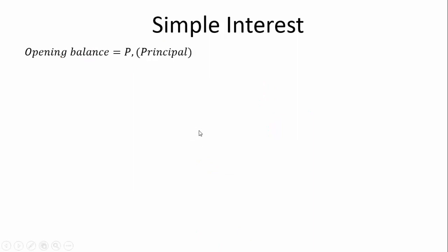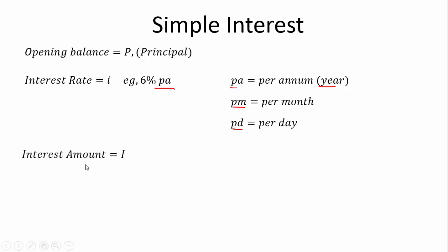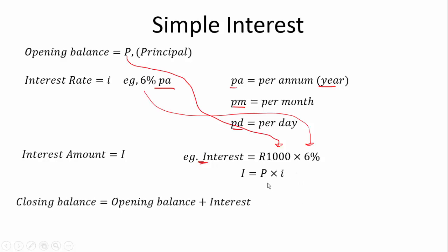Sometimes we call our opening balance P, or our principal amount — this is how much we started with. Our interest rate we call a little 'i'. This could be 6% per annum; per annum means per year (PA), that's 12 months. We might say per month (PM), so we always put the time period after the percent. The interest amount is capital I — the amount of interest gained. So I equals our principal value times our interest rate: I equals P times i.